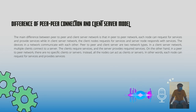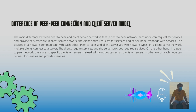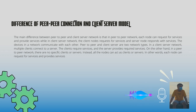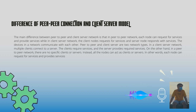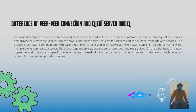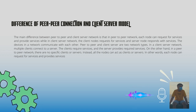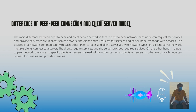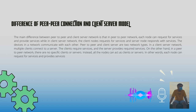The main difference between peer-to-peer and client-server networks is that in a peer-to-peer network each node can both request and provide services, while in a client-server network the client nodes request services and the server node responds with services. In a client-server network, multiple clients connect to a server. In a peer-to-peer network, there are no specific clients or servers — all nodes can act as either, requesting and providing services.